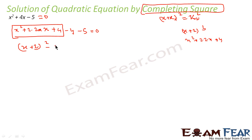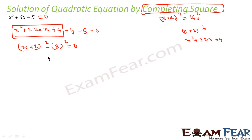So this becomes (x + 2)² - 9 = 0, that is (x + 2)² - 3² = 0. This is exactly the form I was looking for: (x + k₁)² = k₂².